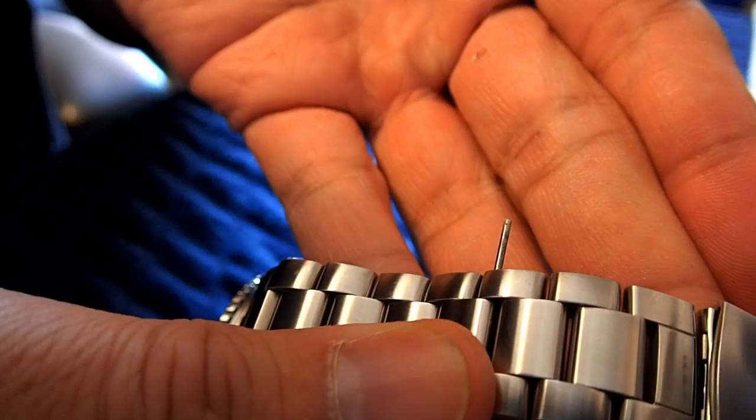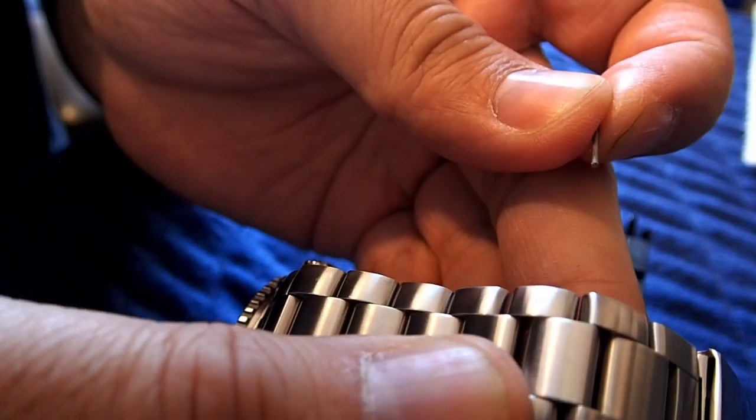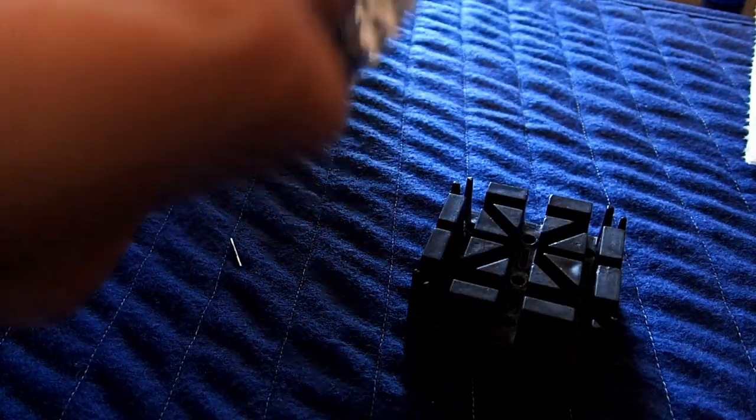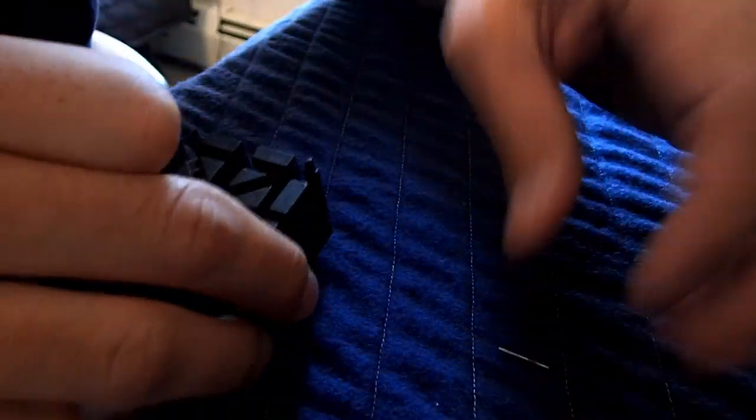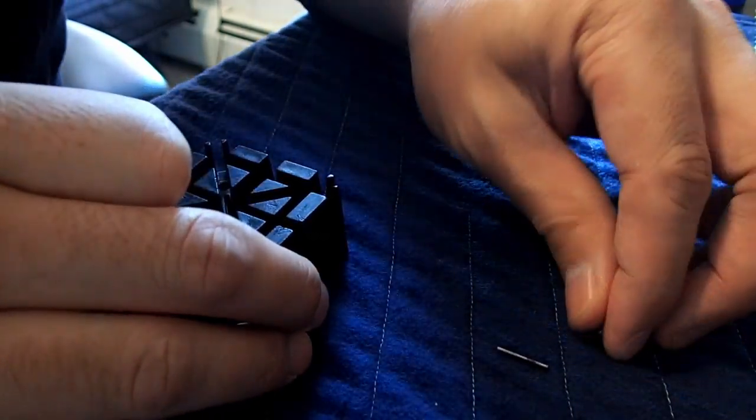And there you go. The pin is pretty much coming out here. And take it out. And that's it. The bracelet is apart. So those pieces that we removed here were the pin, which you can see, and the two screws.